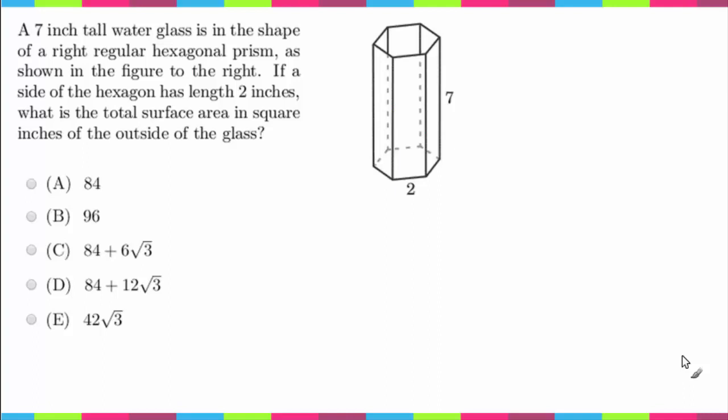So the question says a 7 inch tall water glass is in the shape of a right regular hexagonal prism, as shown in the figure to the right. If the side of the hexagon has length 2 inches, what is the total surface area in square inches of the outside of the glass?